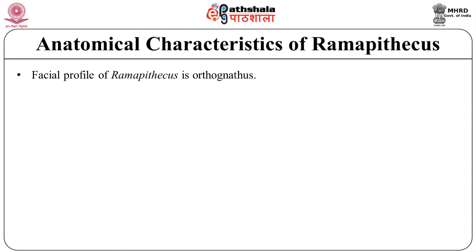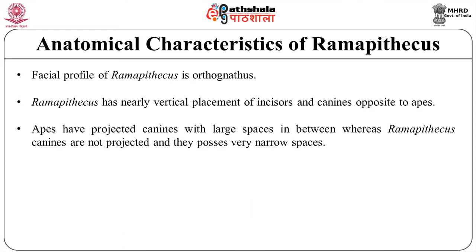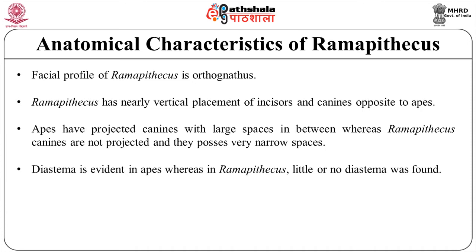The front of the skull is perpendicular due to the short jaws. Ramapithecus has nearly vertical placement of the incisors and canines, opposite to the apes which have teeth in a slight procumbent position. Generally, apes have projected canines with large spaces in between, whereas Ramapithecus canines are not projected and they possess very narrow spaces or no spaces. It also has a canine fossa or depression, as encountered in the fossil Kenyapithecus.